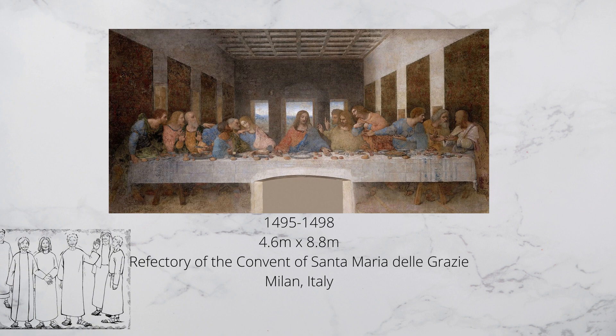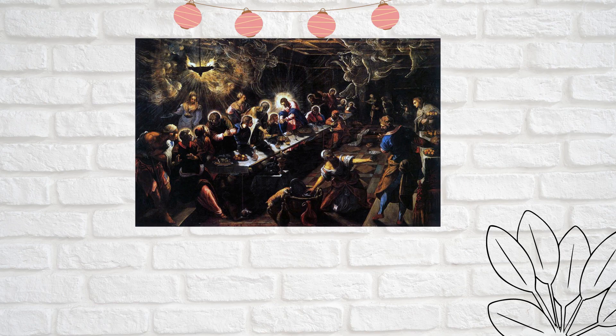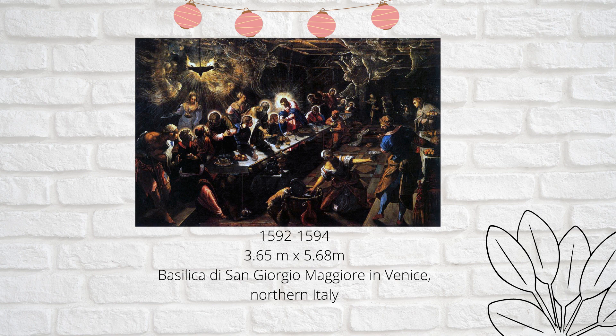For any artwork, having the lighting right is crucial. Da Vinci's mastery of light for the Last Supper is one of the things that makes his painting special. Tintoretto's painting of the Last Supper was considered as an example of Mannerism style.